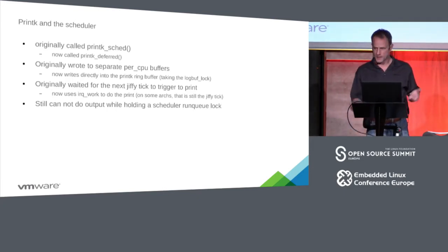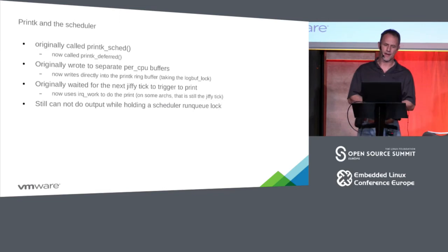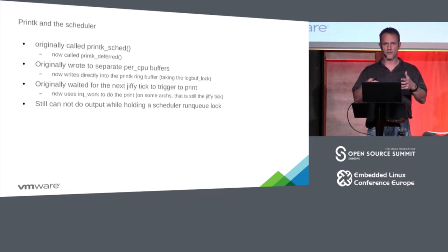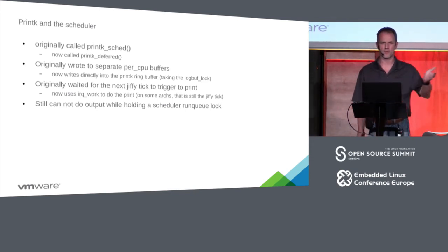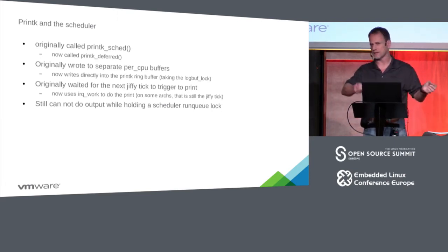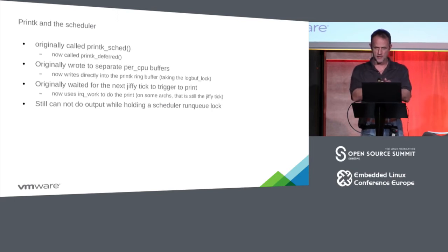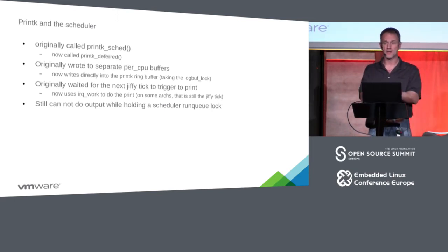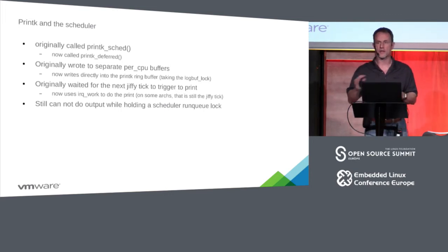To handle this case, we have something called printk_sched, which is now called printk_deferred. It was originally using per-CPU buffers — it would write into the CPU buffers and later wake up and read them to do the actual printks. I noticed that was wasteful because the actual printk buffer is protected by normal spin locks, not the magic console lock. The spin locks only protect that buffer and you don't call anything else while holding them, so you can nest them inside a run queue lock. So printk_deferred just grabs the normal log_buf lock, writes to the printk log buffer, releases it, and later makes sure it gets flushed out.